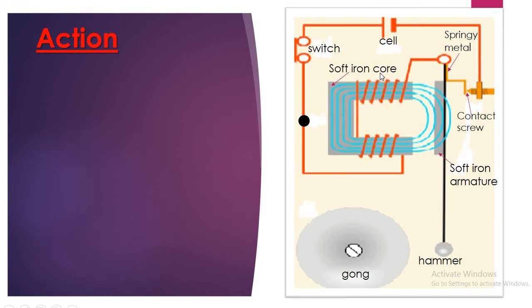This soft iron core is going to act as our magnetic material, which will form an electromagnet. Let us then begin by looking at the action of this bell.